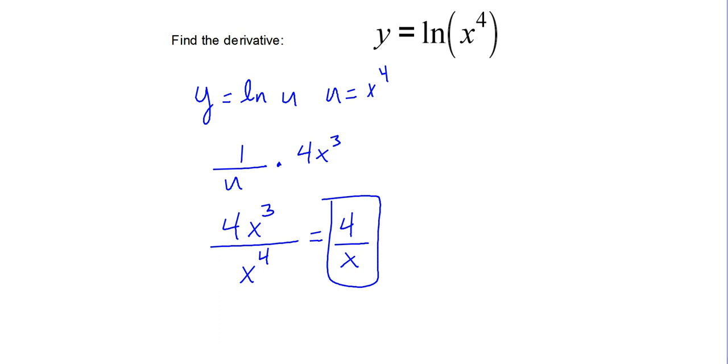Alternatively, we also know some log rules, that the natural log of x to the fourth is equivalent to y equals 4 times the natural log of x. Since we know that the derivative of natural log of x is just 1 over x, the 4 is just a constant out in front, so the derivative of a constant times a function is just the constant times the derivative of a function. It's 4 times 1 over x, or 4 over x. Either way, you get the same answer.